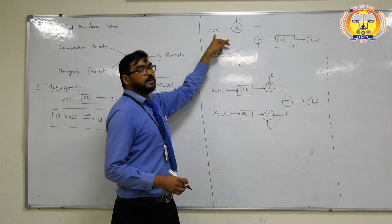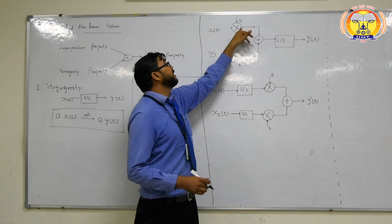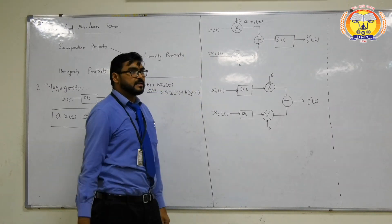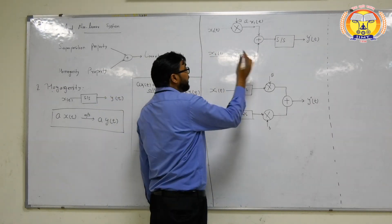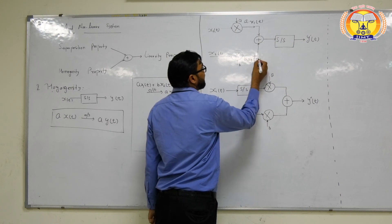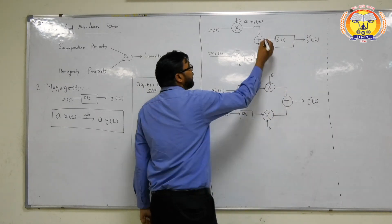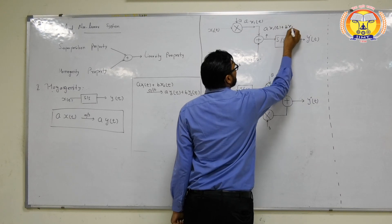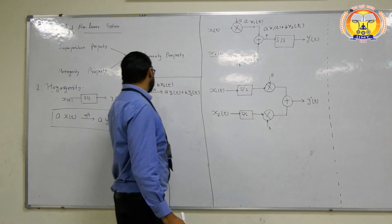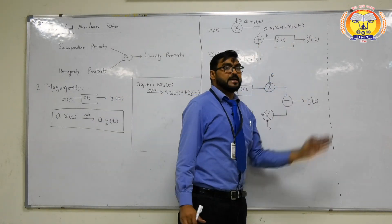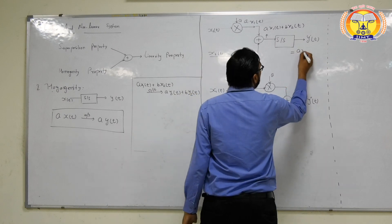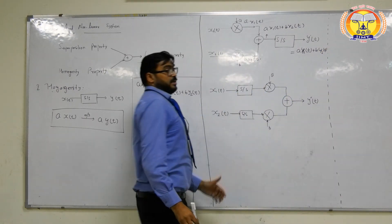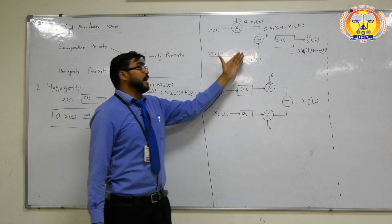First, we apply signal x₁(t) to a multiplier and multiply it with constant 'a' to get a·x₁(t). A second signal x₂(t) is multiplied with constant 'b' to get b·x₂(t). These are then passed through an adder to get input a·x₁(t) + b·x₂(t), which is passed through the system to get output y'(t), which may equal a·y₁(t) + b·y₂(t). This is the first path: multiply and add first, then pass through the system.